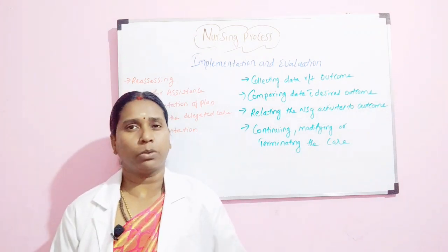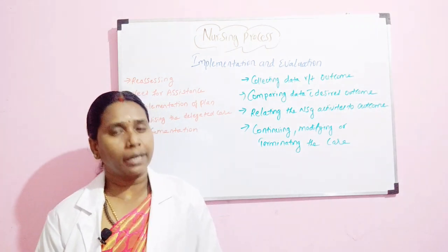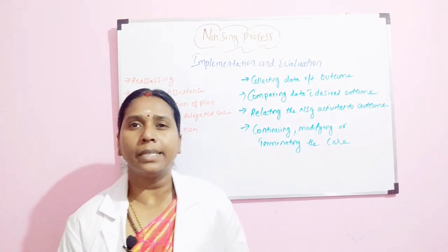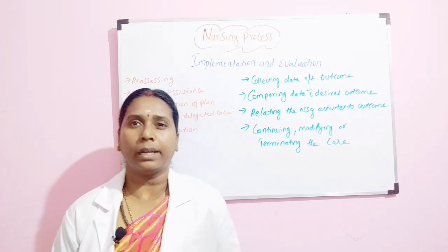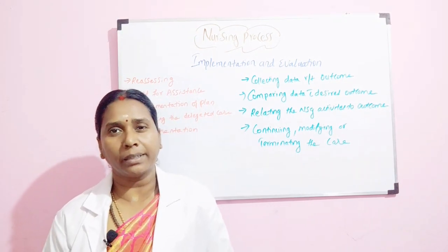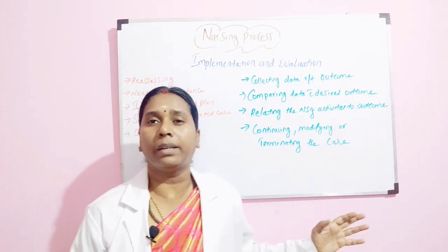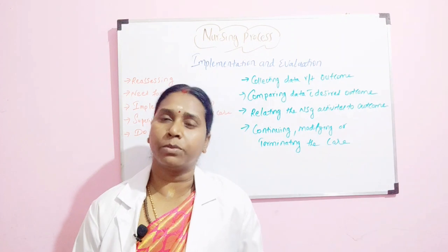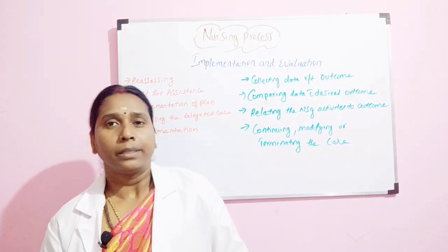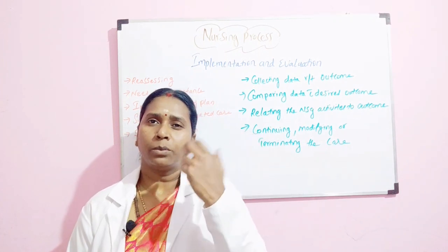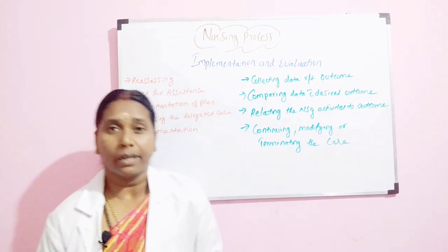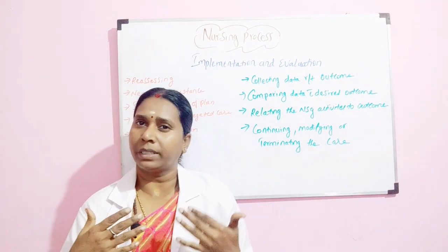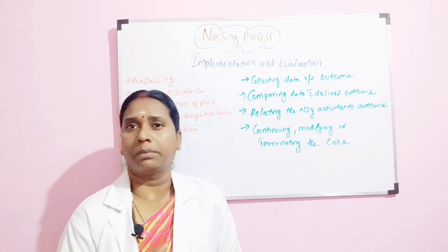Whatever we have done for the patient — all the nursing care provided — we now have to check whether it is working, whether the patient is improving, and whether the nursing care is making the patient better. This can be done only by evaluation. First, collect data related to the outcome. For example, for ineffective breathing pattern, the relevant data would be respiratory rate, saturation level, and chest wall movement. You assess and write findings such as 'patient saturation improved to 98-96%' and 'respiratory status is normal.'